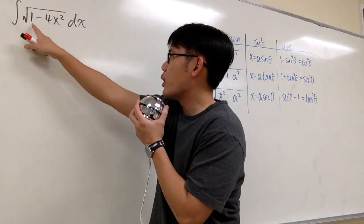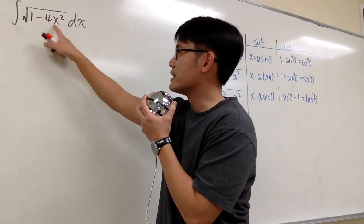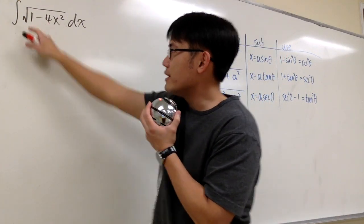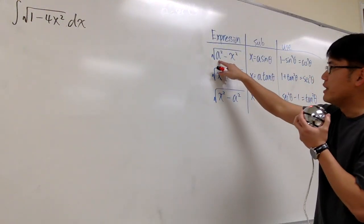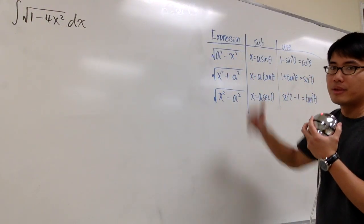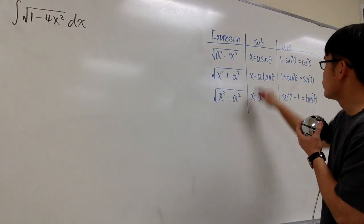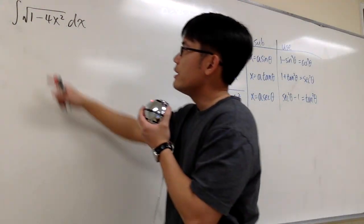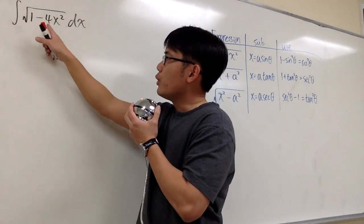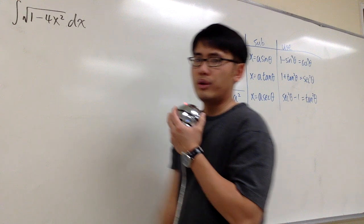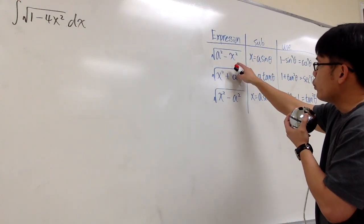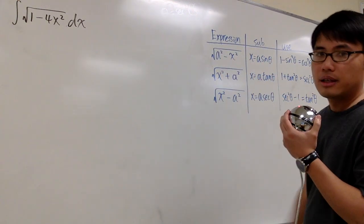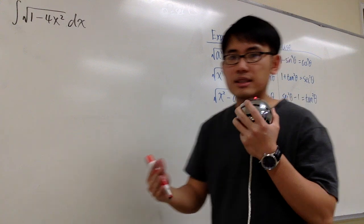We are going to integrate the square root of 1 minus 4x squared. As you can see, we have the number 1 in front — that's the first situation because we have a squared, where a is the number. So we are expecting to use these substitutions. But we don't want to have the 4 in front of the x squared; this can only work if you have minus x squared.